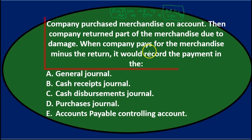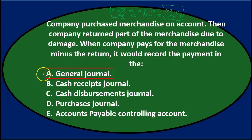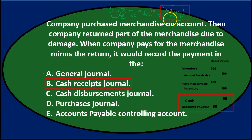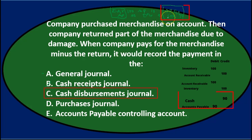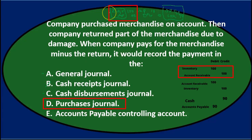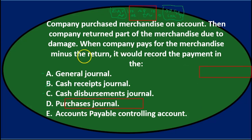So when the company pays the merchandise minus the return, where do we record that payment? A) the general journal — that's our default, used when no other journal fits. B) cash receipts journal — we're not receiving cash here, we're paying cash, so that's out. C) cash disbursements journal — we are paying cash, so that seems reasonable. D) purchases journal — that was for the original purchase on account, not for the payment. E) accounts payable controlling account — that's a general ledger account, not a journal.